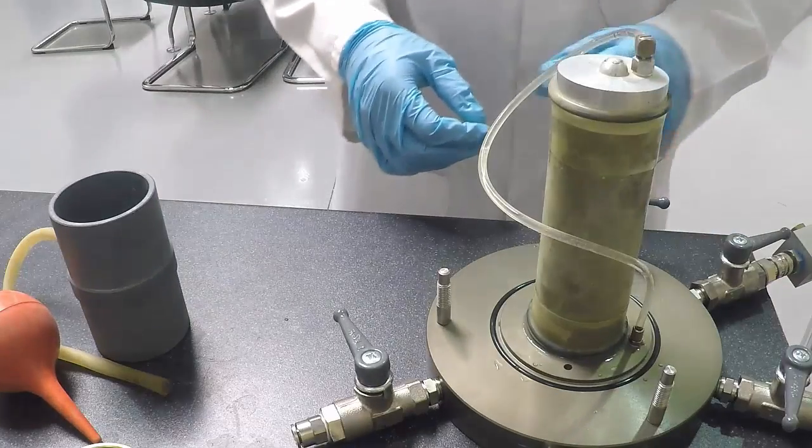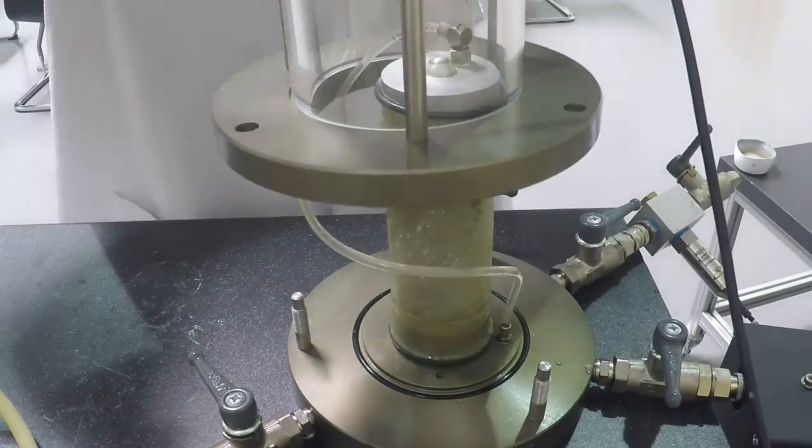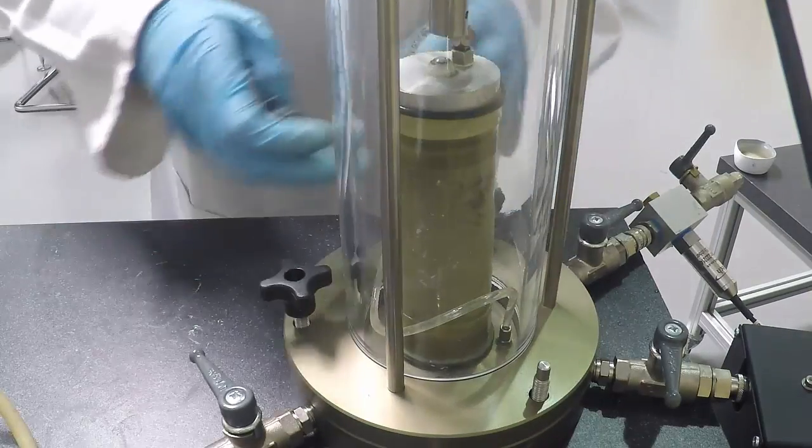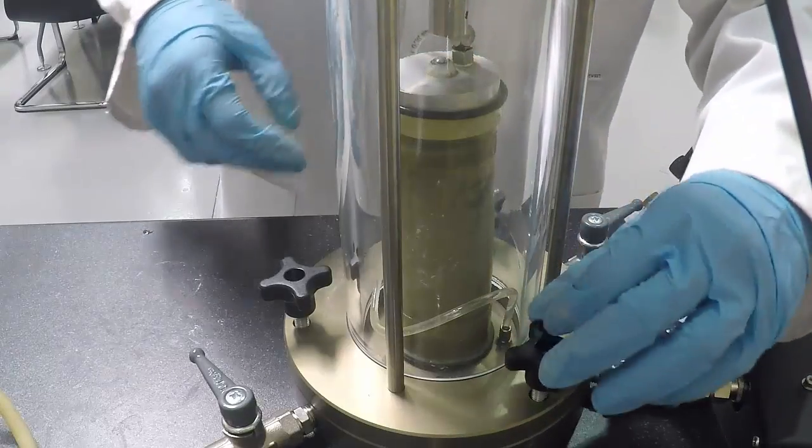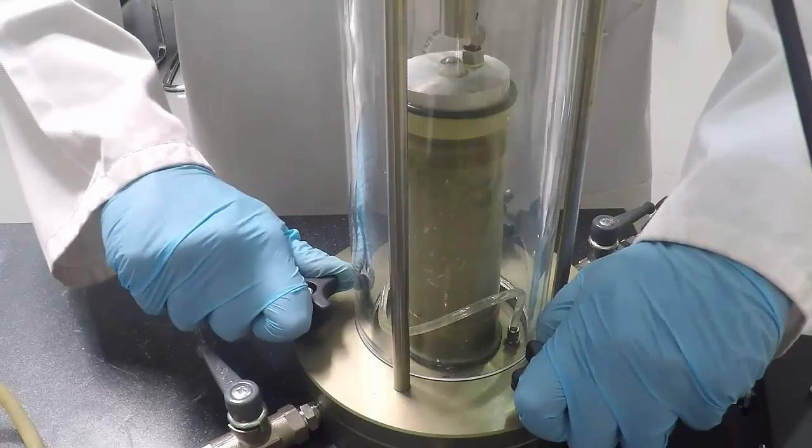You have now assembled your specimen for testing. Place the top of the triaxial cell onto the base and seal by screwing the locking nuts evenly. You may wish to apply a small amount of silicone grease on the O-ring to help avoid leakage.